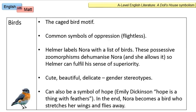Finally, the last symbol is birds. The caged bird motif is a common motif associated with oppression and flightlessness — the idea of being trapped. At the beginning, Helmer labels Nora with a list of birds; they are possessive, he often says 'my.' These zoomorphisms dehumanise Nora so Helmer can fulfil his sense of superiority. It gives him power to call his wife a little sparrow or a little thrush. Those animals are cute, beautiful and delicate — so there's also a degree of gender stereotyping and the male gaze here. She also allows it, or at least seems to, almost labelling herself with these same terms, suggesting a degree of complicity.